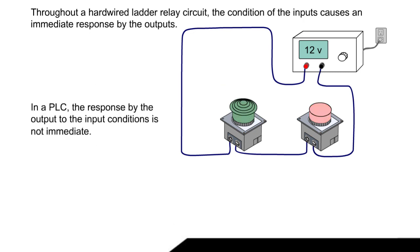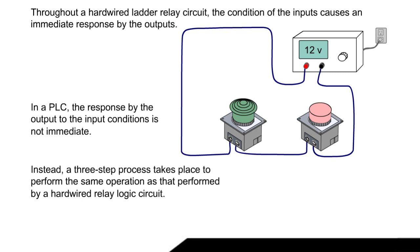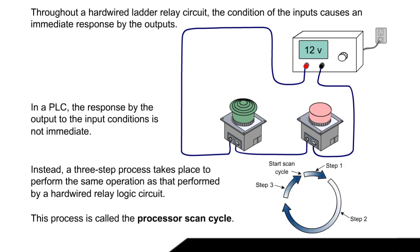In a PLC, the response by the output to the input conditions is not immediate. Instead, a three-step process takes place to perform the same operation as that performed by a hardwired relay logic circuit. This process is called the Processor Scan Cycle.